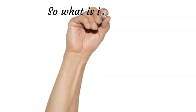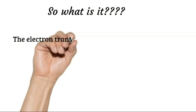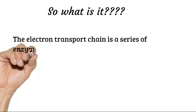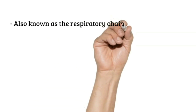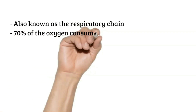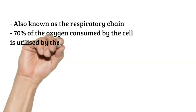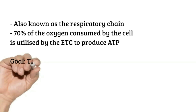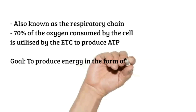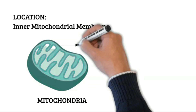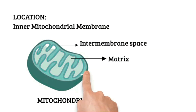So what is the electron transport chain? It is basically a series of enzymatic reactions within the inner membrane of the mitochondria. The electron transport chain is also known as the respiratory chain. 70% of oxygen consumed by the cell is utilized by the electron transport chain to produce ATP. The goal of the electron transport chain is to produce energy in the form of ATP.